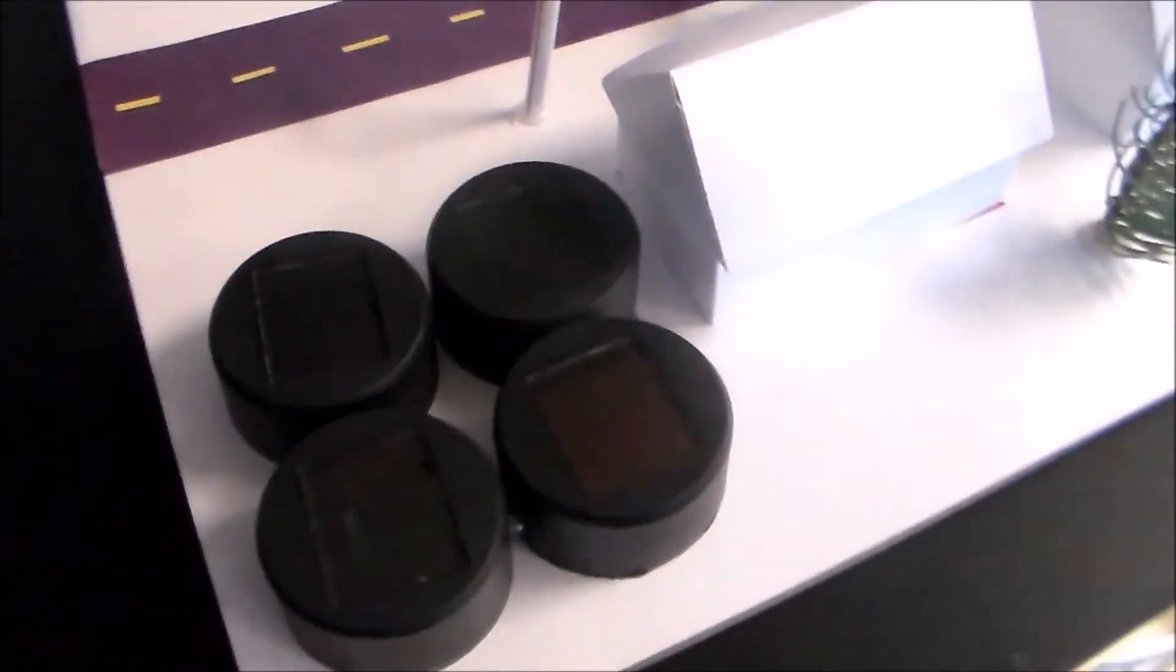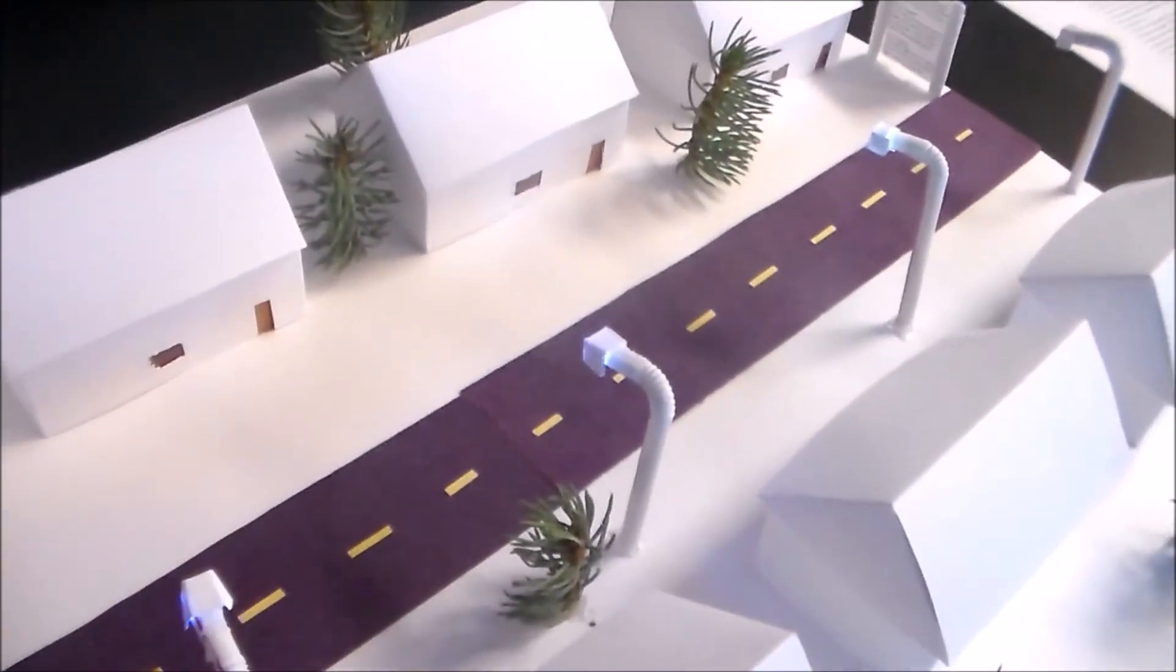And then here's the solar panels, and it's wired underneath, and it turns on the streetlights, and that's supposed to represent that when the sun goes down, then the streetlights come on.